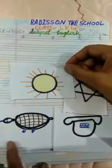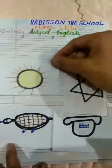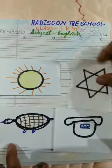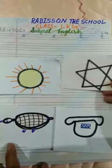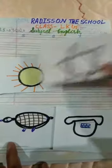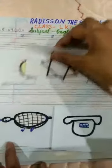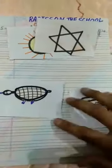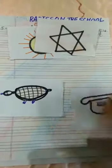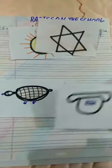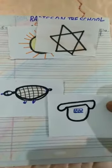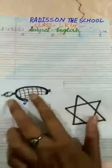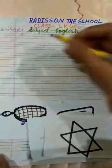First of all, what is this? S for sun, S for star. Then T for tortoise, T for telephone. Let's start the time.